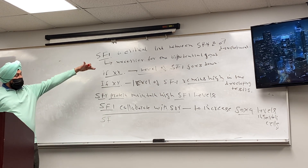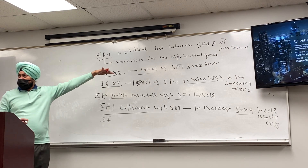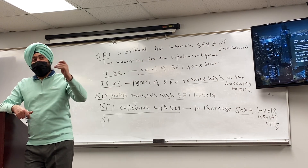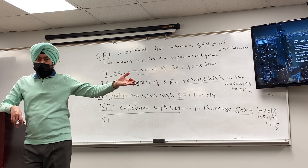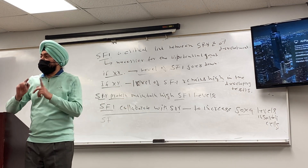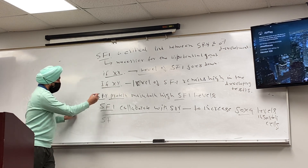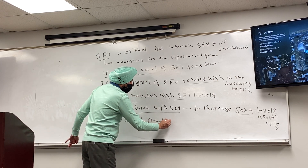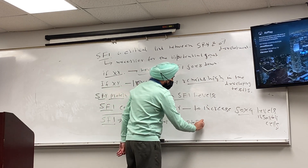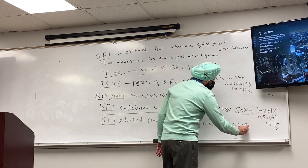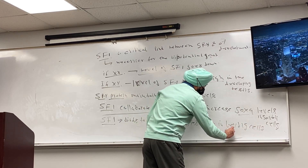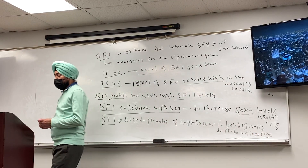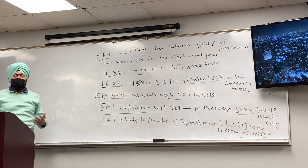We talked about anti-Müllerian hormone production — SOX9 induces anti-Müllerian hormone production. But testosterone is also produced, which makes the mesonephric duct into the epididymis and vas deferens. So what induces testosterone production? SF1 actually binds to the promoter of testosterone in Leydig cells to produce testosterone.